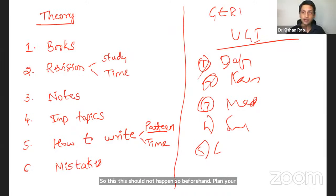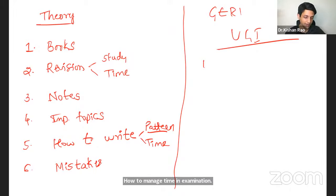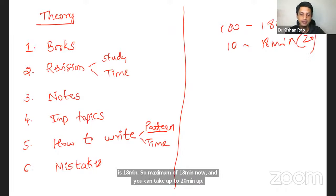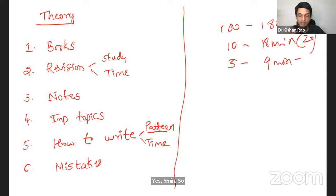Second thing is importantly, equally important is time management. How to manage time in the examination. That is, for example, now, you are writing for a hundred marks in 180 minutes, correct? Three hours. So for a 10 mark, how much time you have? That is 18 minutes. So maximum of 18 minutes. You have maximum. You can take up to 20 minutes. 18 to 20 minutes for five marker. How much you have is nine minutes. So nine to 10 minutes you can take for a short essay.